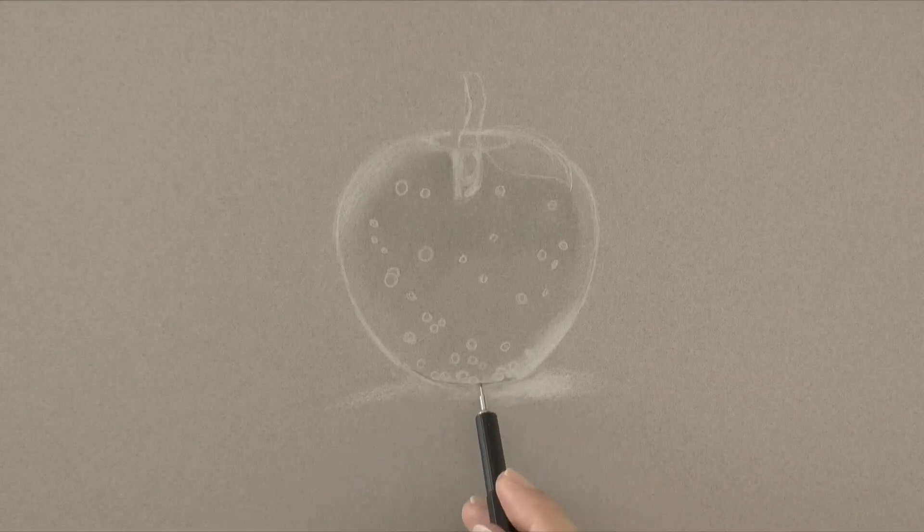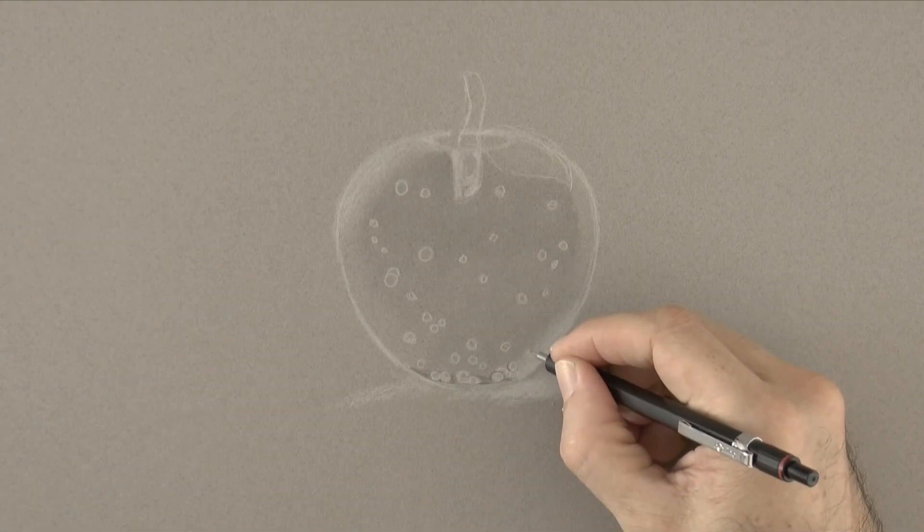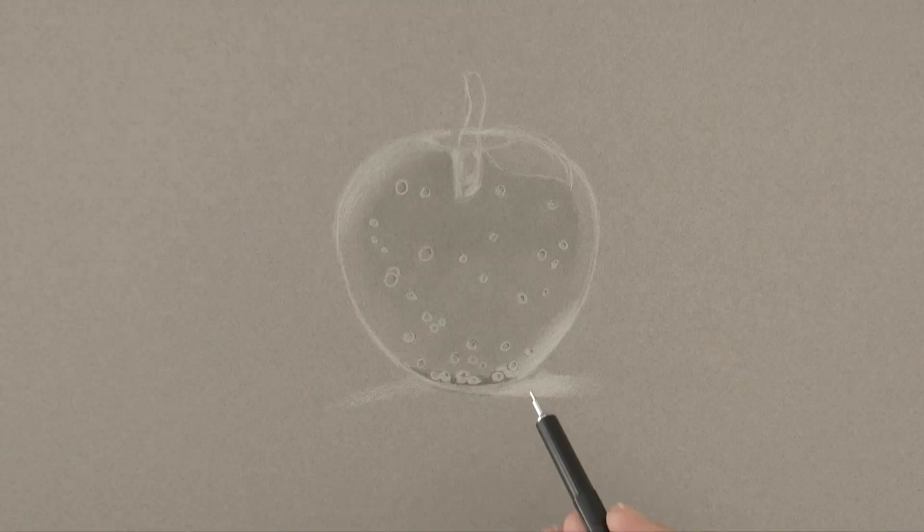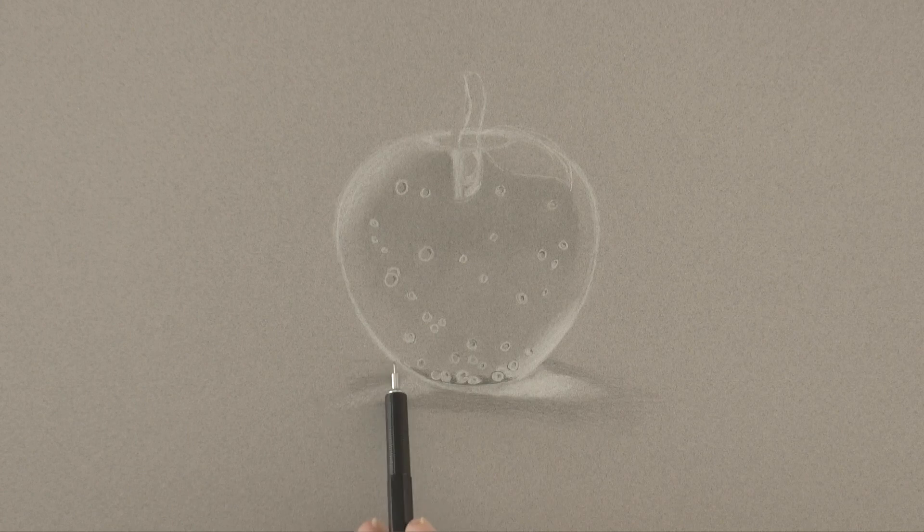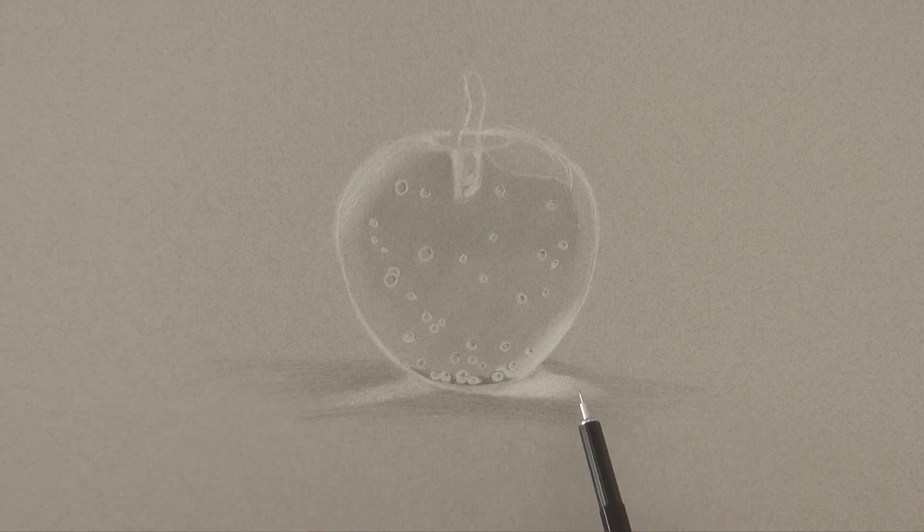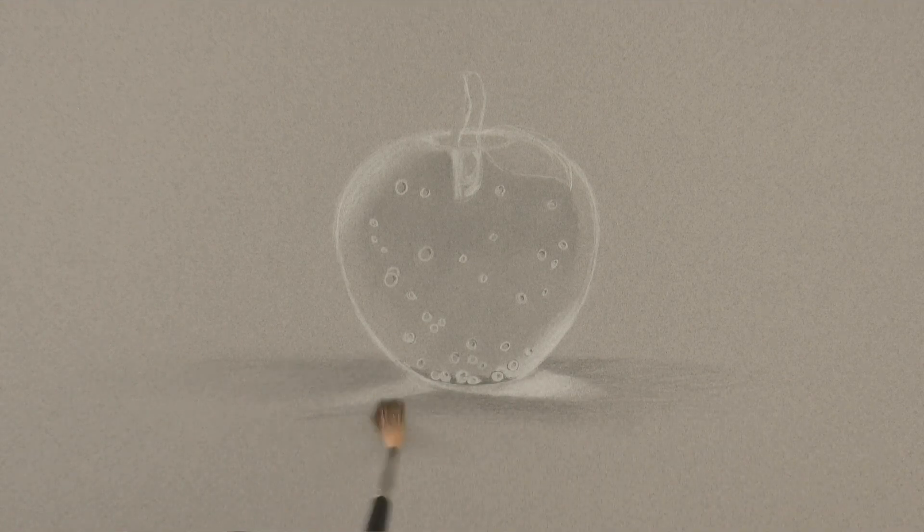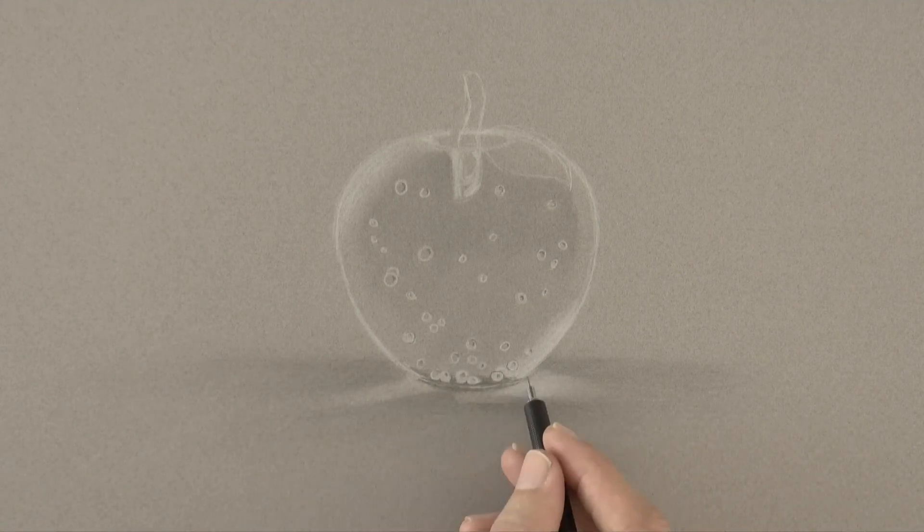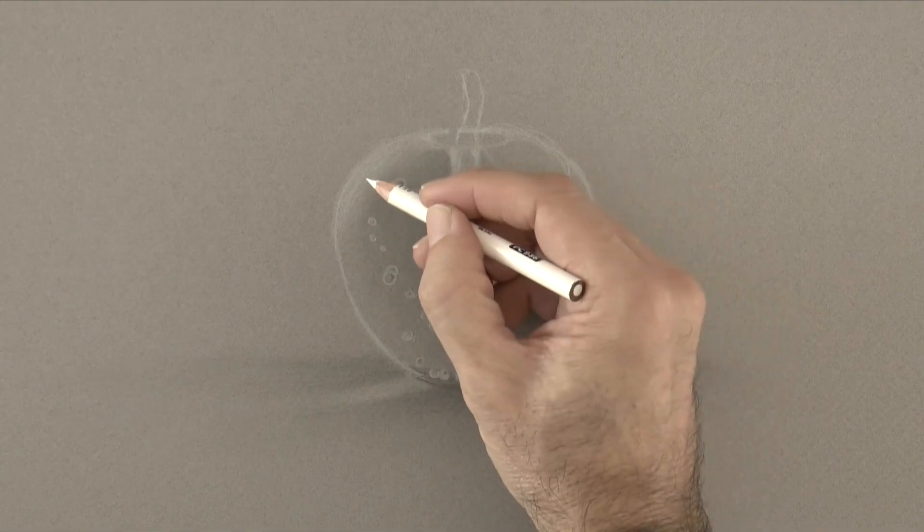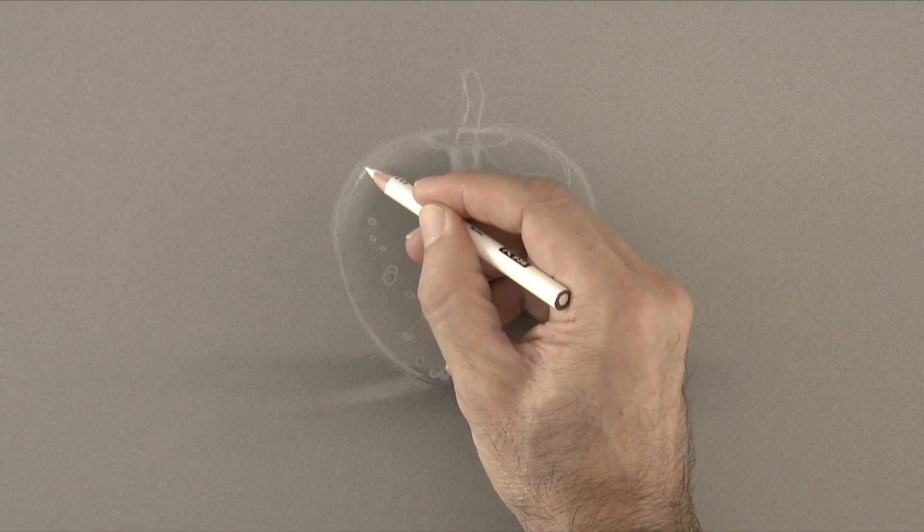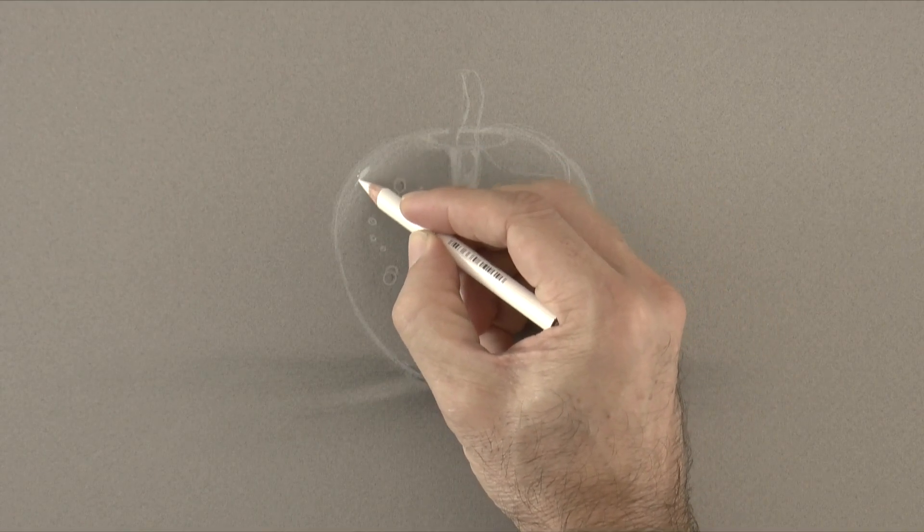With the mechanical pencil we do the shadows and as we are working on toned paper, we can do the lights with a white pencil. The apple creates a shadow but also projects a light. We may also soften the shadow with the brush. And then we darken the spot where the apple touches the surface. Here where the light hits first should be a shining reflection.